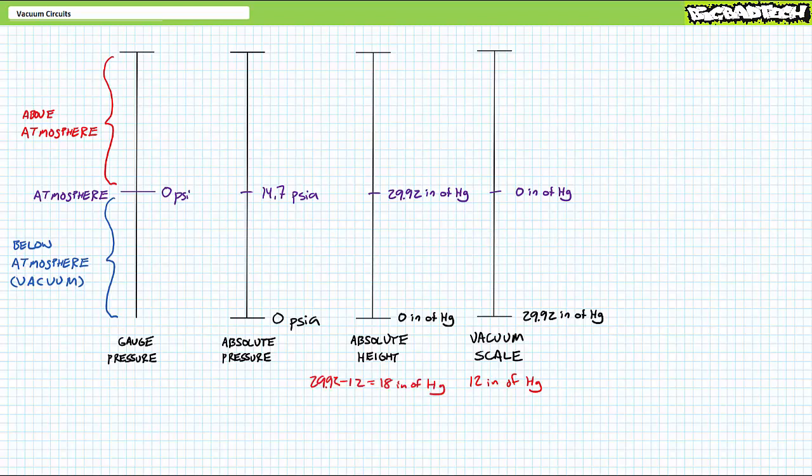To convert from the vacuum scale to absolute height scale, one needs to flip-flop the reading. 12 inches of vacuum means the 30-inch column of mercury moved down 12 inches, thus 30 minus 12, or 18 inches remains.